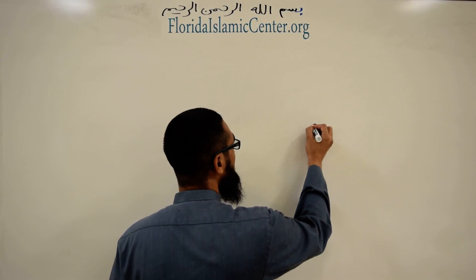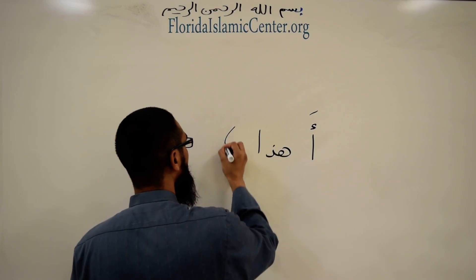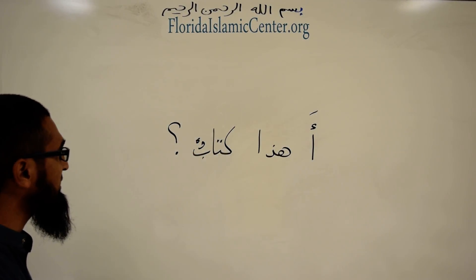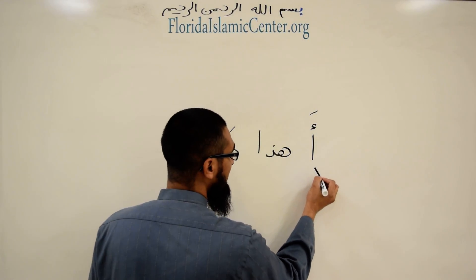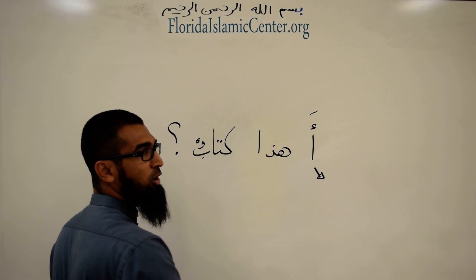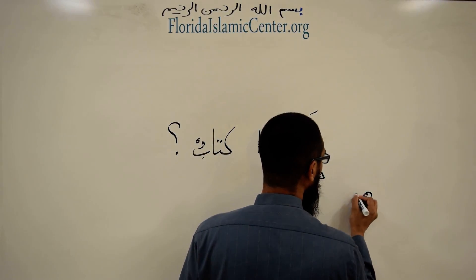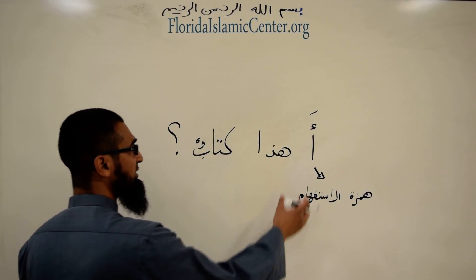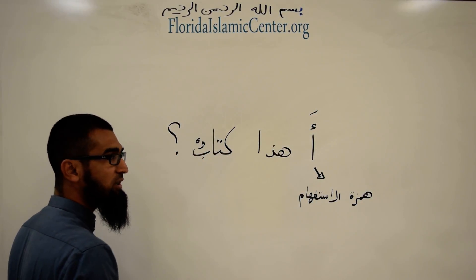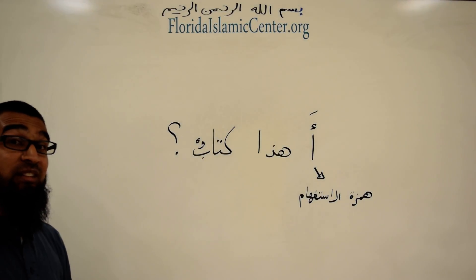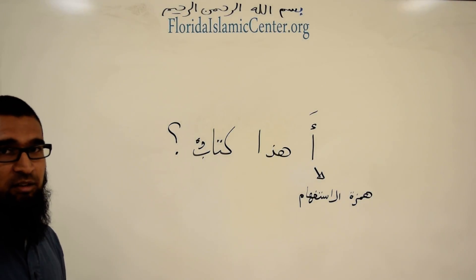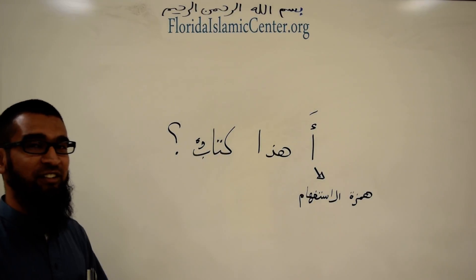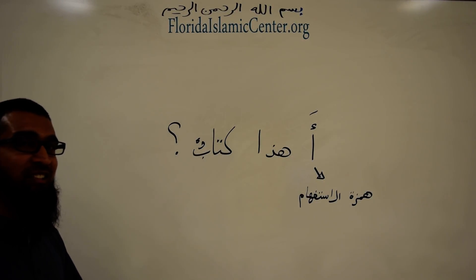How do you ask 'Is this a book?' You would say: أهذا كتابٌ — this question marker is called Alamatul Istifham, the sign for a question. This here is called Hamzatul Istifham — a Hamza for asking a question. Notice it has a fatha on it: أهذا كتابٌ — 'Is this a book?' For this lesson we're not going to learn to negate a sentence yet — that will come later on.